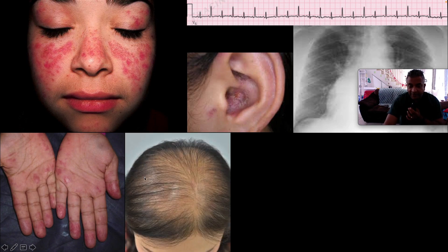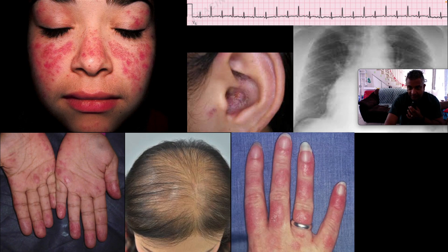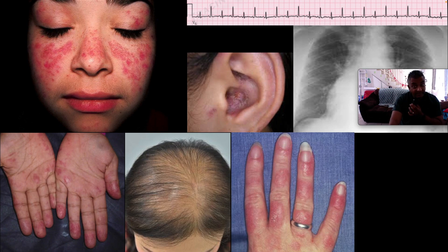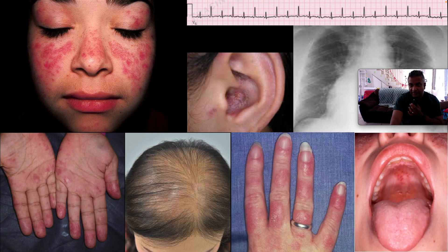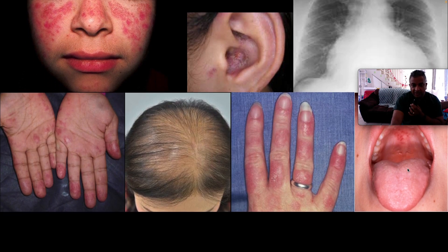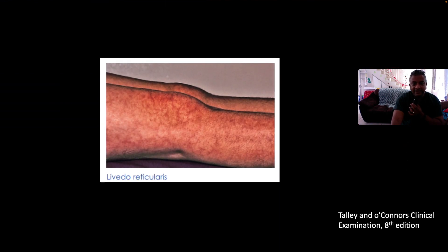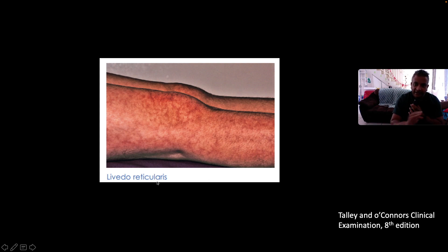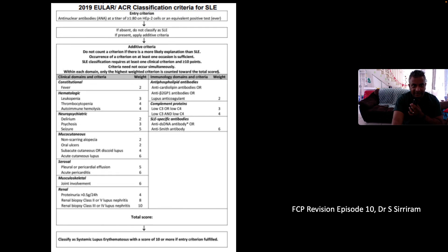Here we have non-scarring alopecia. This is what we call Gottron's papules — Gottron's papules occur over the knuckles and are typical in dermatomyositis. Sometimes we have overlap syndrome with lupus and dermatomyositis. Here we can see typical mouth ulcers and vasculitic lesions in the hard palate. This is livedo reticularis — a network or mesh-like framework seen on the skin.